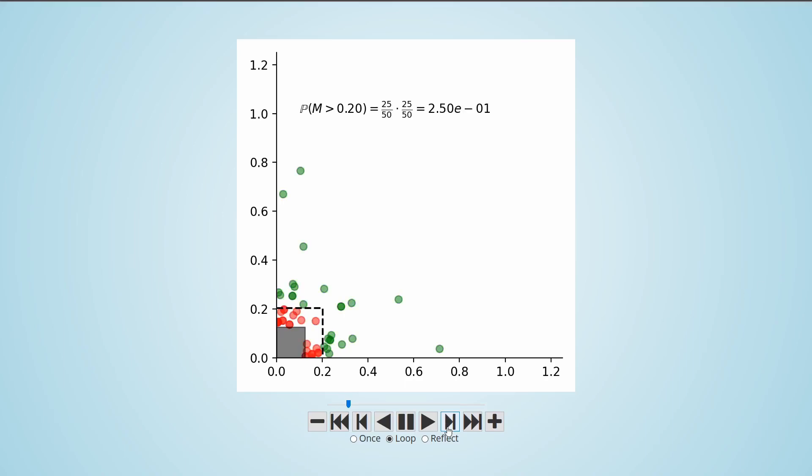We repeat the same process as before by finding a new threshold, 0.2, so that about half of our points are on each side of the threshold. And we have the probability estimate that M is greater than 0.2 which is about 25%. We throw away the small points and we regenerate the whole population using MCMC.